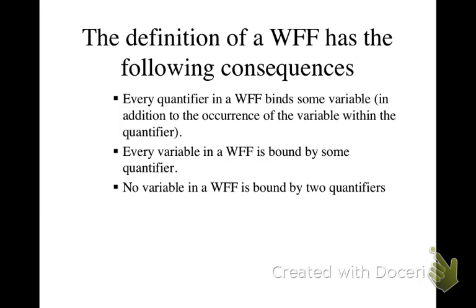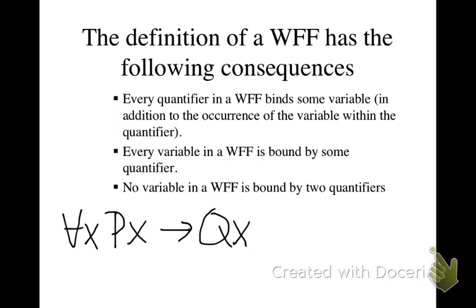Every variable in a well-formed formula is bound by some quantifier. When we looked at the scope of the quantifier, we talked about free variables. So if I have 'for all X, PX → QX' — that's not a well-formed formula, because the X in QX is free and not bound by the quantifier. But if I put the whole thing in parentheses, then it's a well-formed formula, because every variable is bound by the quantifier.